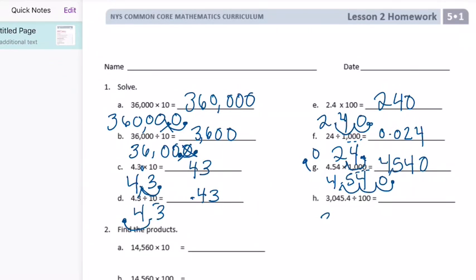Last one, 3,045.4 divided by 100. 100 is 10 to the second power. We're moving it two places to the left, making it smaller. We get 30.454.